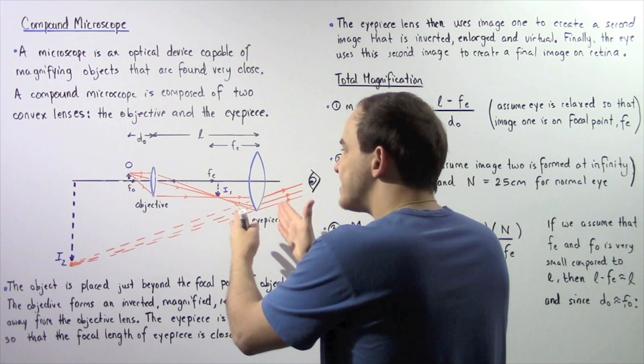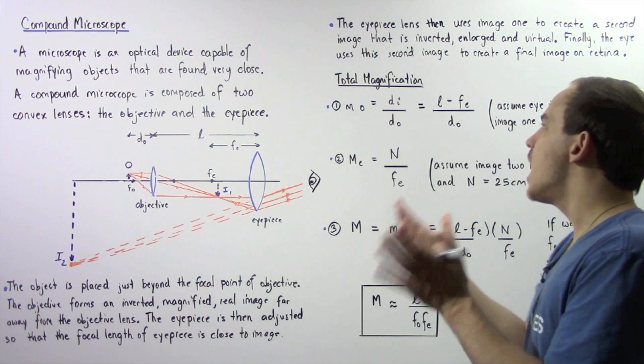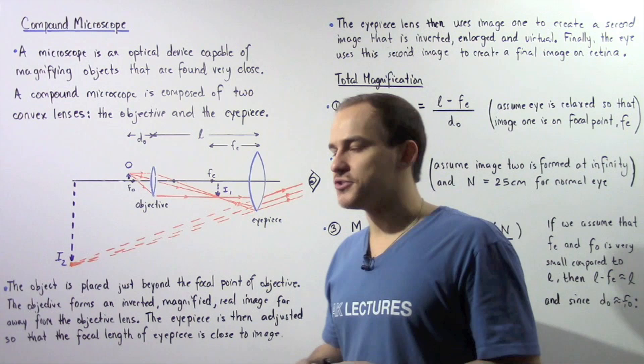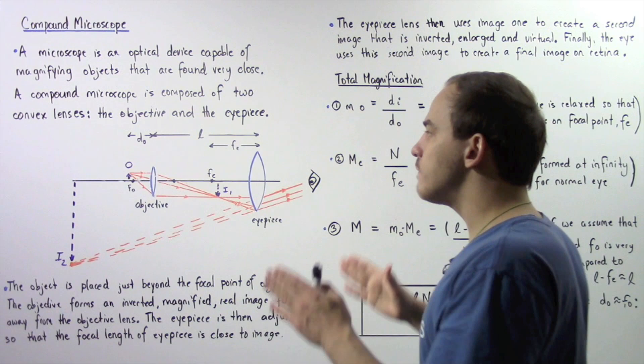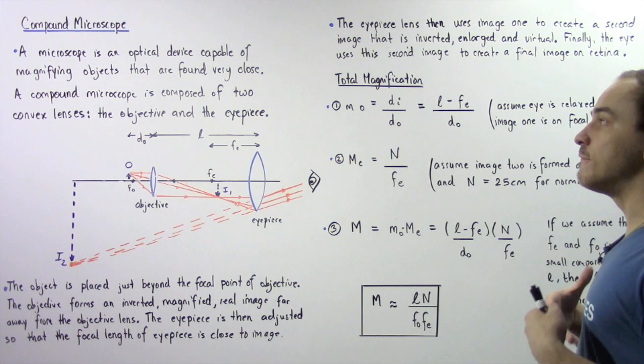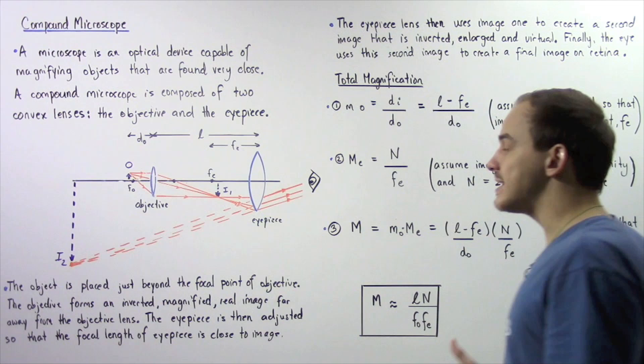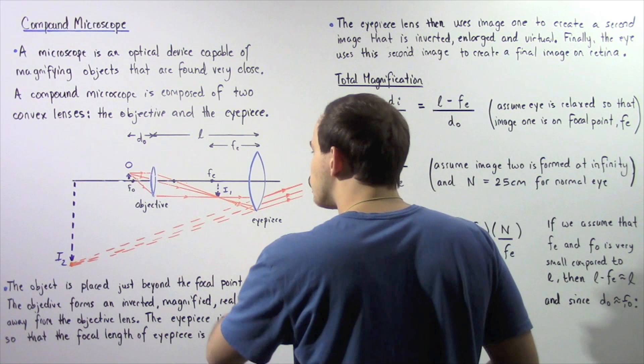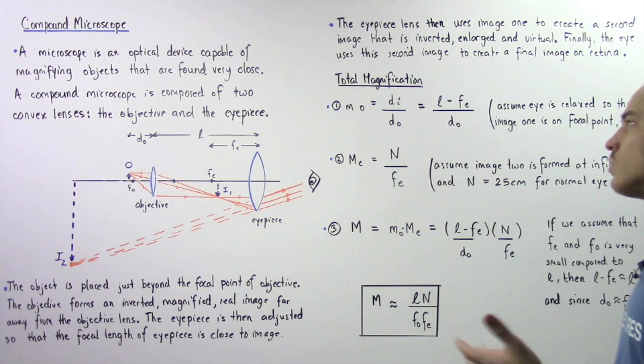The microscope magnifies in two stages so the person can observe all the detail on the object — that's exactly what a compound microscope does. To find the total magnification of a system of two convex lenses, we find the individual magnifications of each lens and multiply them together to get the final total magnification.